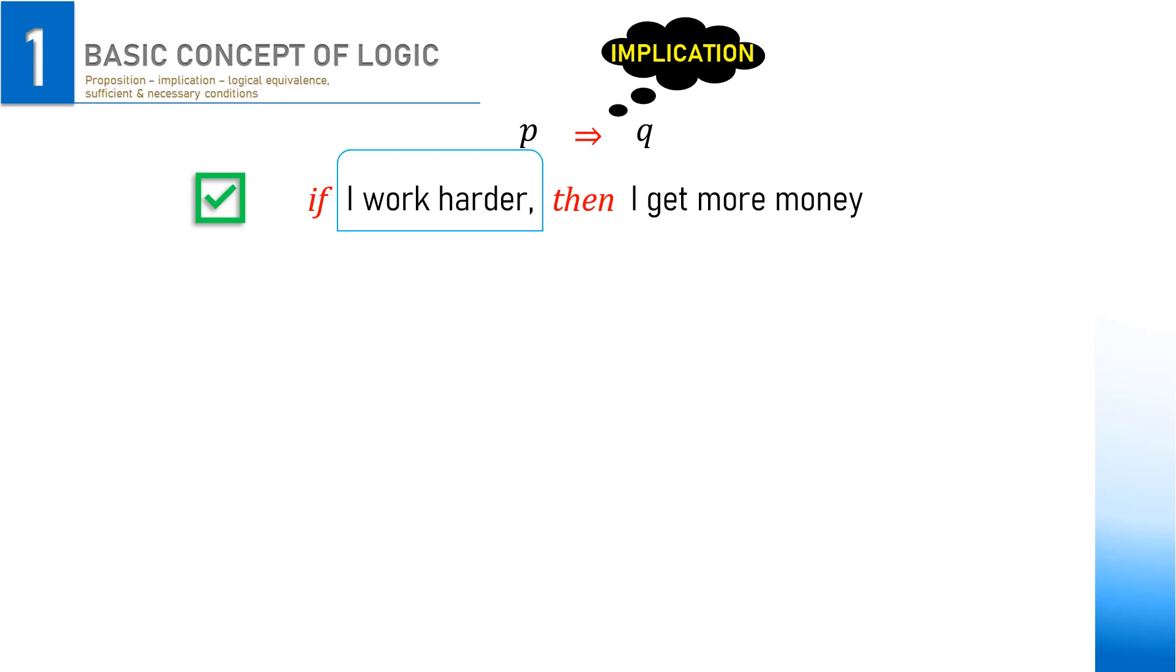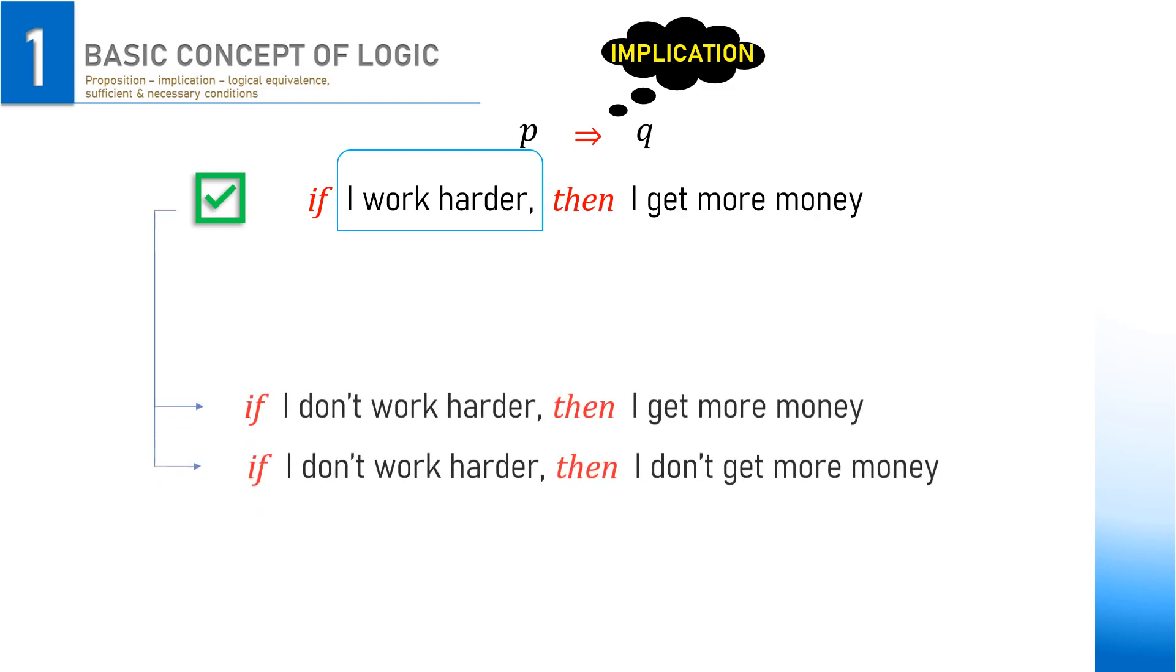P implies Q is also defined to be true if P is false, no matter Q is true or false. So, here we go, we have two possible statements for the false P. If I don't work harder, then I get more money. And if I don't work harder, then I don't get more money. Both statements are true.